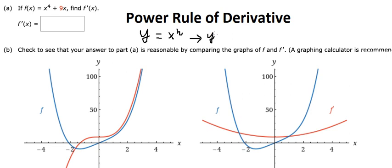If we do the first derivative, we have n times x to the power of n minus one. So with number four, if we apply the formula we have 4x to the power of four minus one, which gives us 4x to the power of three.